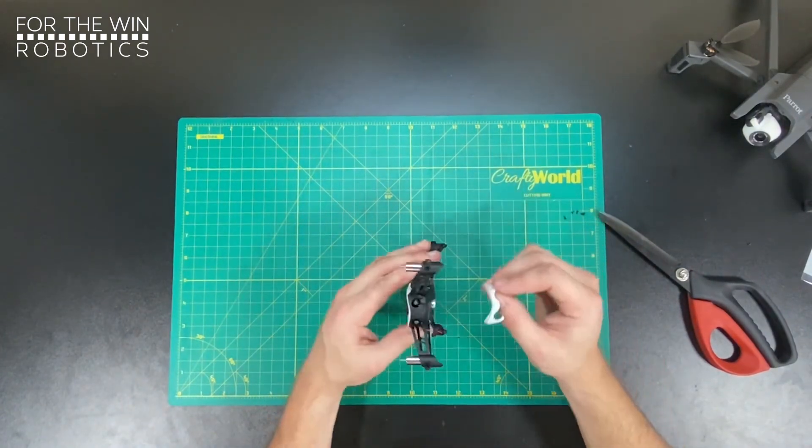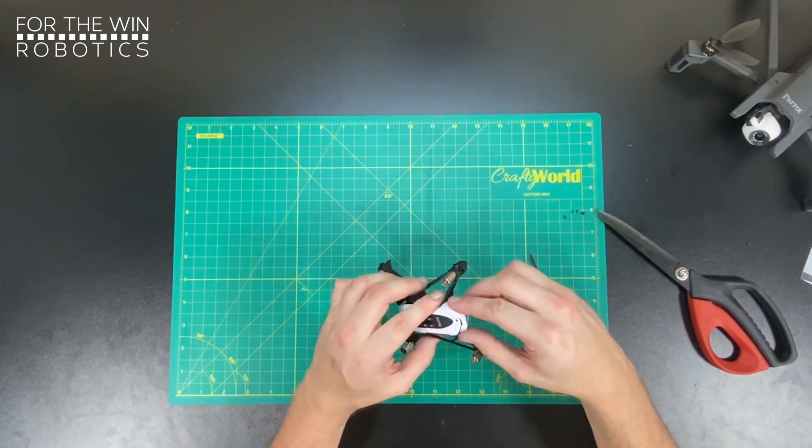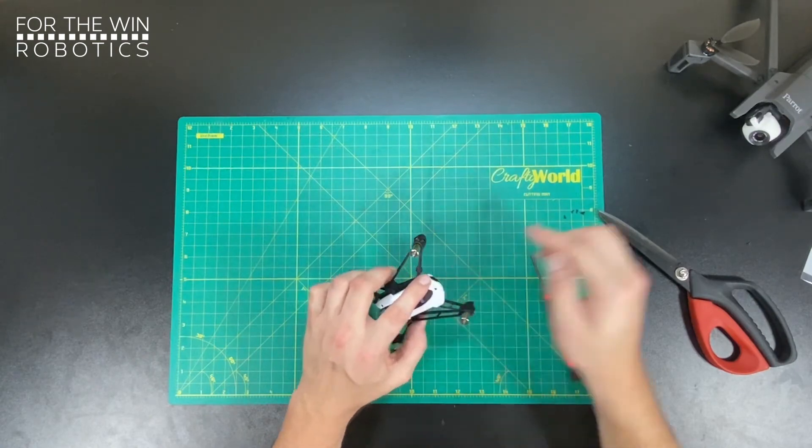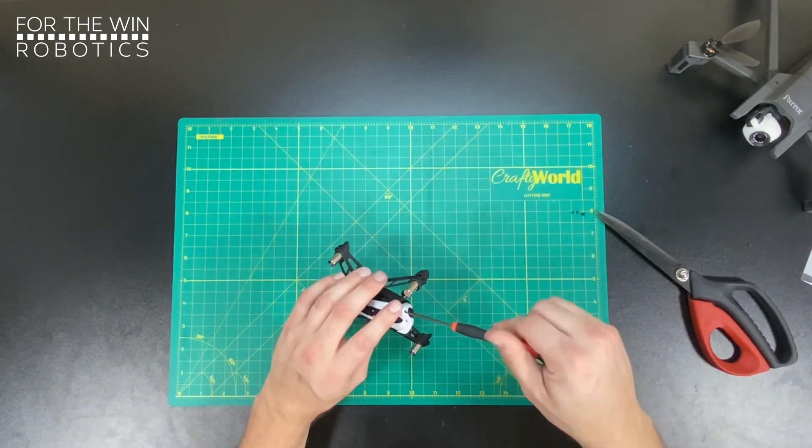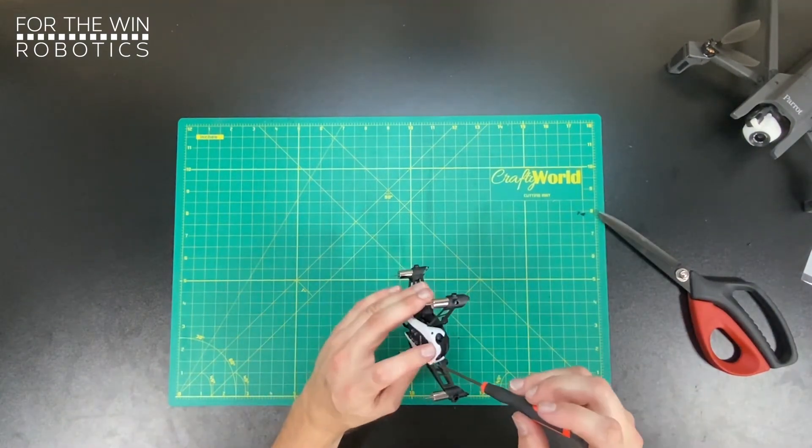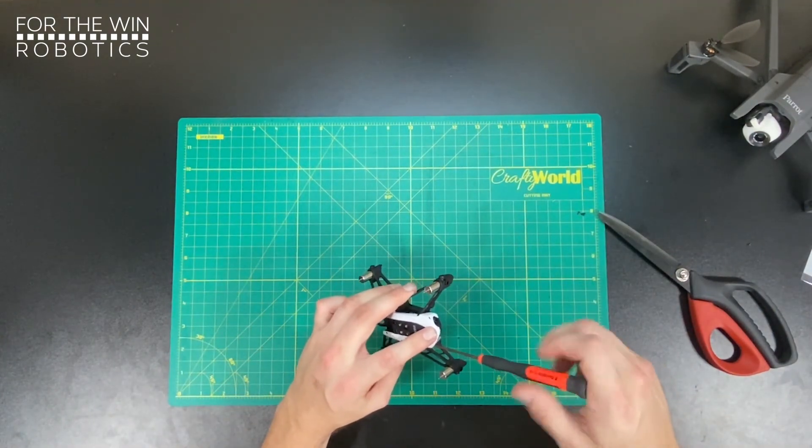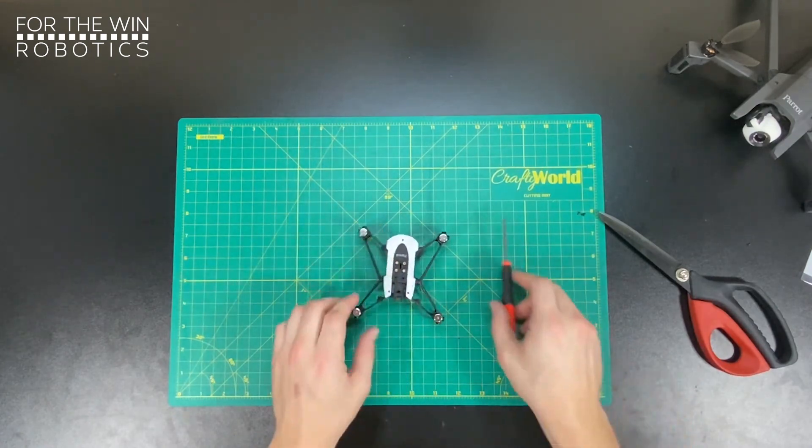And lastly, the final faceplate covering. Two screws on that. And once we are all screwed in, the Mambo covers are done. And now we're done.